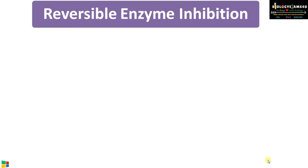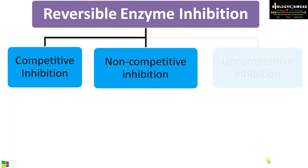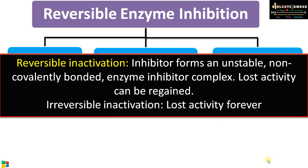The three major types of reversible enzyme inhibition are competitive inhibition, non-competitive inhibition, and uncompetitive inhibition. In reversible inhibition, the inhibitor forms an unstable, non-covalently bonded enzyme-inhibitor complex that can be reversed by adding more substrate or by using reactivators, so the lost activity can be regained. Whereas in irreversible inactivation, the inhibitor forms covalent bonds with the active site and the lost activity is gone forever.